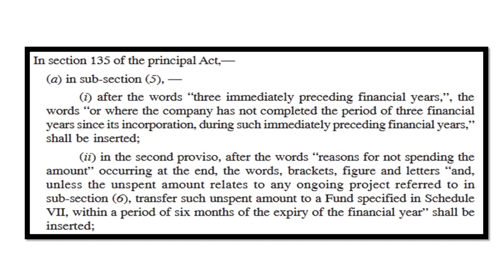These words have been inserted. Point number two states that in the second proviso, after the words 'reasons for not spending the amount,' the following words are being inserted: 'and unless the unspent amount relates to any ongoing project referred to in sub-section 6, transfer such unspent amount to a fund specified in Schedule 7 within a period of six months of the expiry of the financial year.'